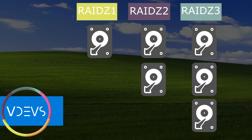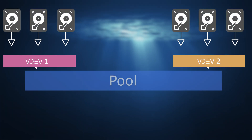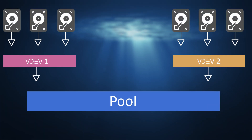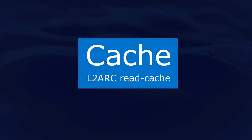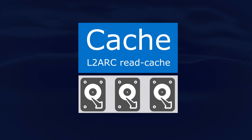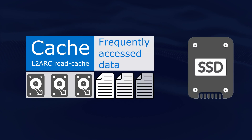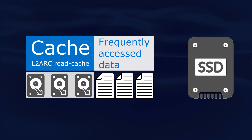A pool can have multiple Data VDevs in it. Next, let's talk about Cache VDevs. A Cache VDev, also known as an L2ARC read cache, is used to accelerate read operations. Conceptually, a read cache holds onto frequently accessed data to help speed up access to bits stored on slower spinning disks. You can only have one read cache per pool.